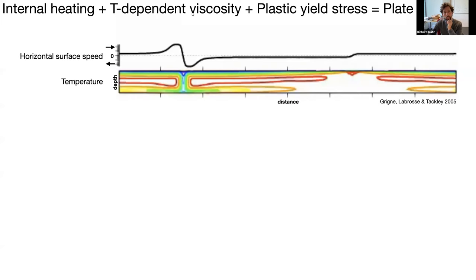The temperature-dependent viscosity gives you plates. It makes the lithosphere rigid, but the plastic yield stress is needed so that those plates can break. This is a very obvious feature of rocks — we have earthquakes, we have faults — and it turns out that this is a crucial ingredient for plate tectonics.